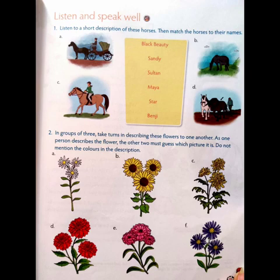This is your classwork for today — write a paragraph on friends. Next is Listen and Speak. Listen to a short description of these horses, then match the horses to their names. Which is Black Beauty, which is Sandy, which is Sultan, which is Maya, which is Star, and which is Benji? You just have to match these words with the pictures.